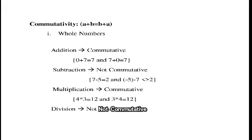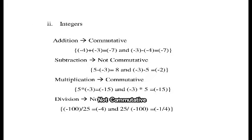Multiplication also has a commutative property. See the example: 4 into 3 equals 12 and 3 into 4 equals 12. Division is not a commutative property — check with examples.